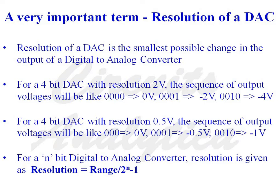Let us consider a 4-bit digital-to-analog converter with resolution 2. The sequence of output voltages will be: for input combination 0000, output voltage is equal to 0; for input combination 0001, output voltage is equal to minus 2V, and so on. For a 4-bit DAC with resolution 0.5, for input 0000, output is 0V; for 0001, output is minus 0.5V; for 0010, output is minus 1V.